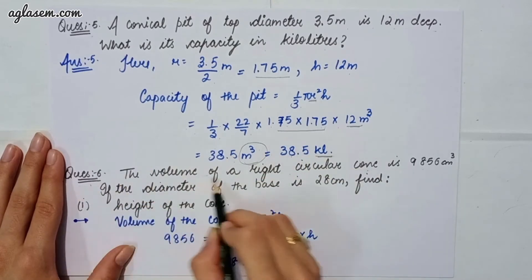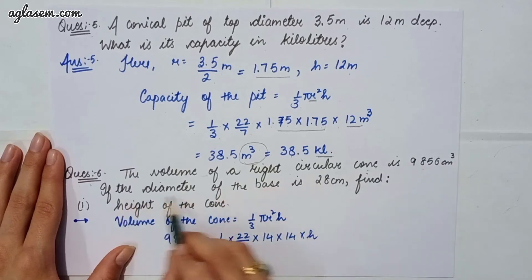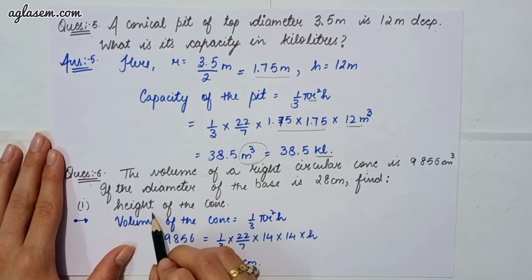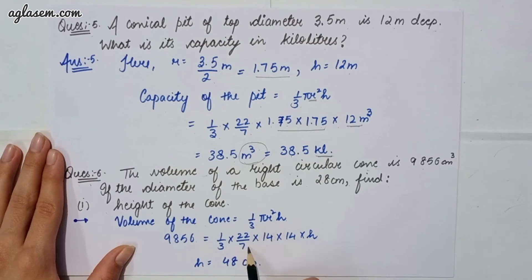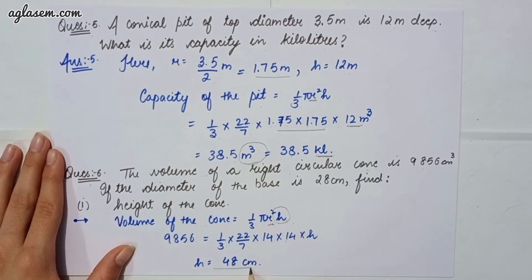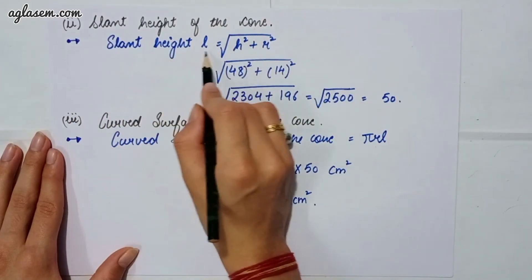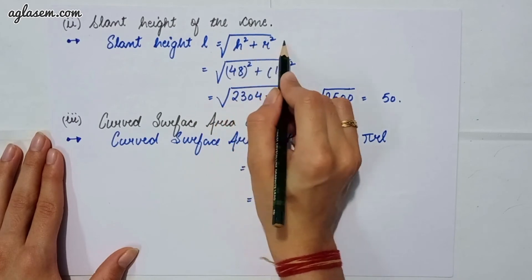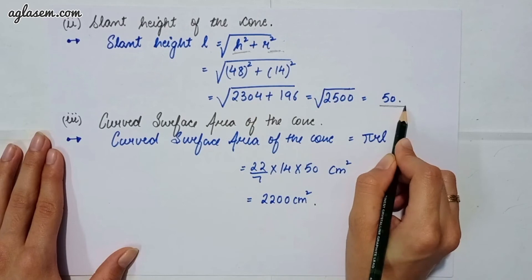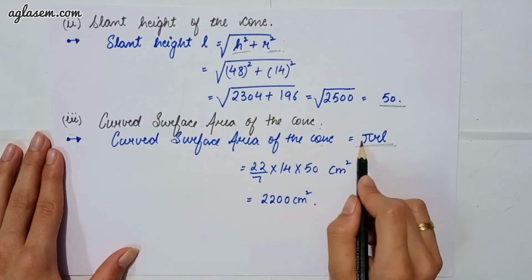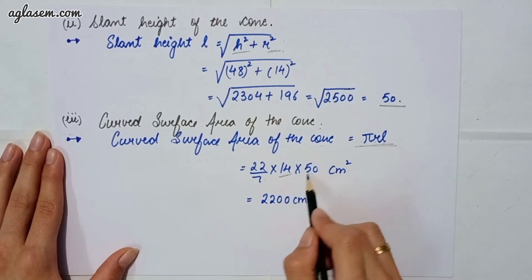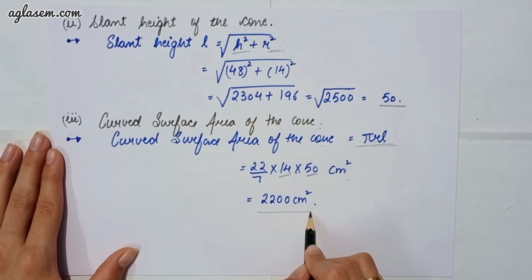Moving to our sixth question: the volume of a right circular cone is 9856 cm³. If the diameter of the base is 28 cm, find: Part 1 — height of the cone. Using volume = 1/3 × π × r² × h, placing 9856 = 1/3 × 22/7 × 14 × 14 × h, we get height = 48 cm. Part 2 — slant height: l = √(h² + r²), placing values gives l = 50 cm. Part 3 — curved surface area = π × r × l = 22/7 × 14 × 50 = 2200 cm².